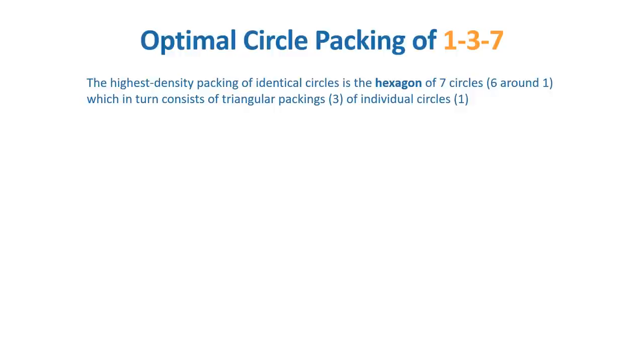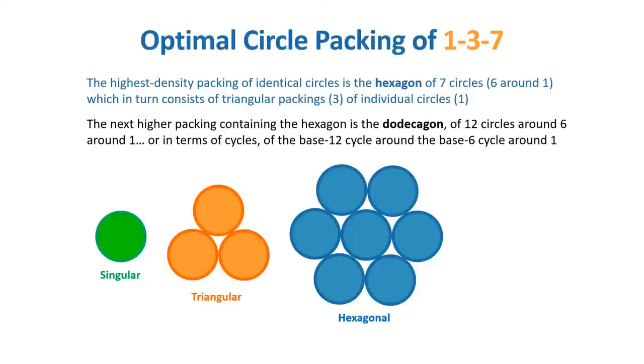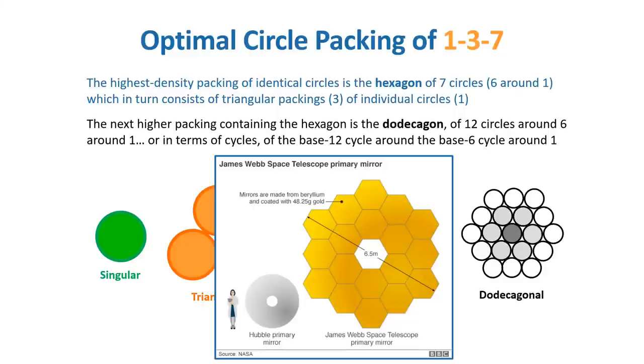In a purely geometric way, 137 also describes the optimal packing of identical circles to best utilize an available area. This packing arrangement is the hexagonal of seven circles, six around one, which in turn consists of triangular packings of individual circles. This progression from one to three to seven is just a different way that 137 can show up, as a sequence of three optimization steps instead of a single optimized number. Interestingly, the next higher level packing configuration containing the hexagon is the dodecagon of 12 circles around six around one, the same pattern as the primary mirror of the recently launched James Webb telescope, only there using hexagons instead of circles so as to fully utilize the surface area with no gaps, and the same ultra-efficient honeycomb structure mastered by bees.